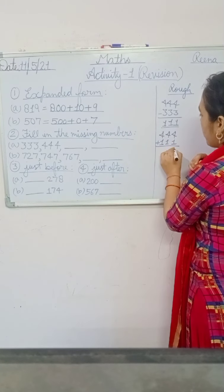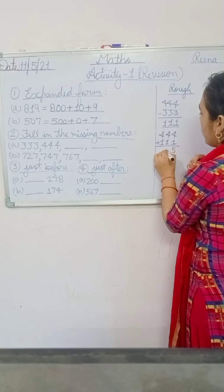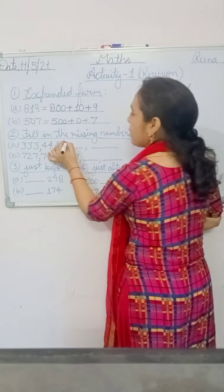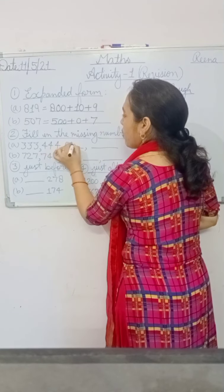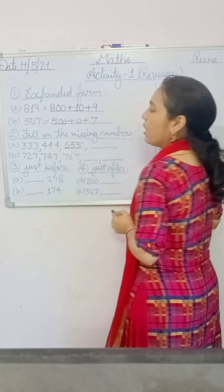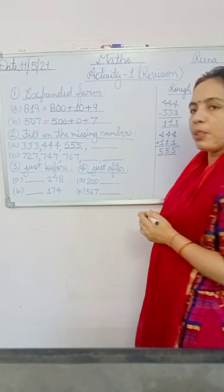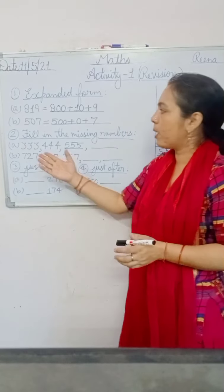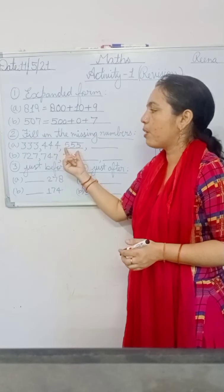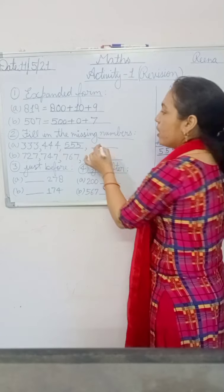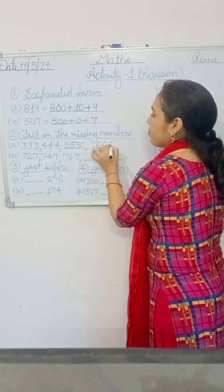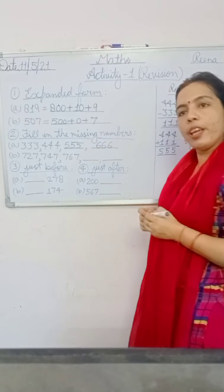Four plus one is five, five, five — that means the next number is 555, which is triple five. And the number after that is triple six — 666.